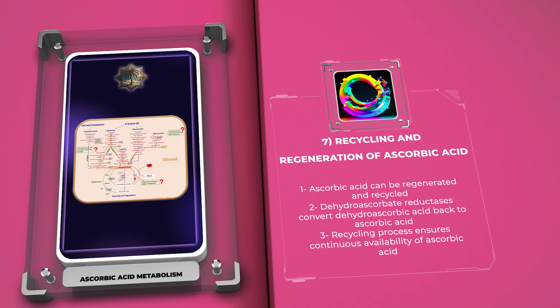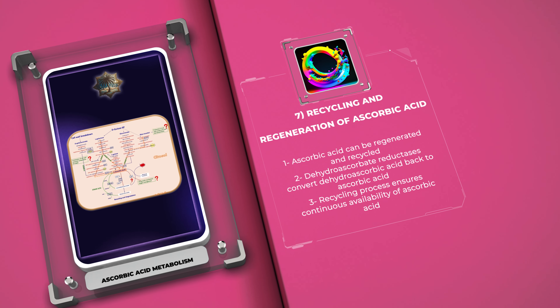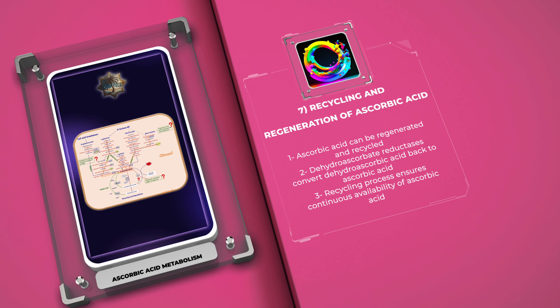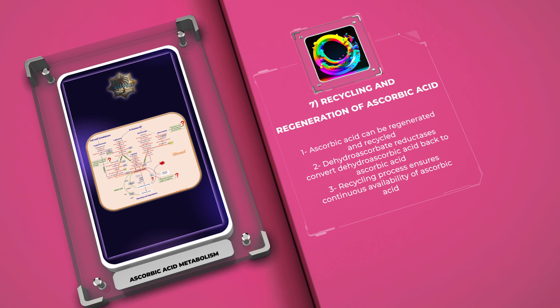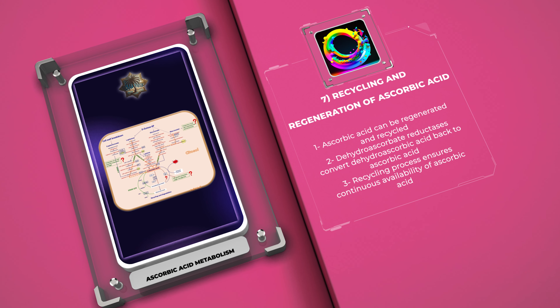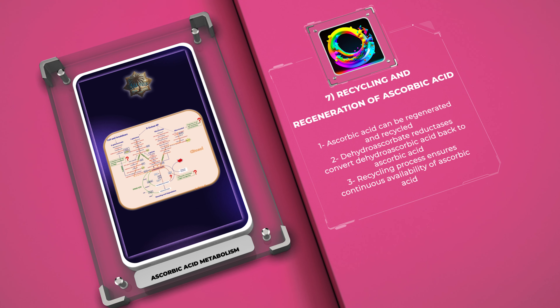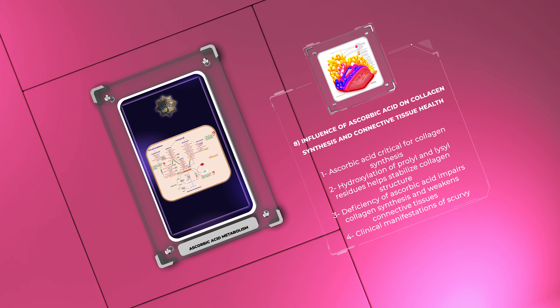One of the significant pathways involved in ascorbic acid recycling relies on the action of dehydroascorbate reductases, which can convert dehydroascorbic acid back to ascorbic acid by utilizing electron donors such as glutathione. This recycling process ensures the continuous availability of ascorbic acid and helps maintain its cellular functions, becoming especially important in conditions where there may be a propensity for ascorbic acid depletion.